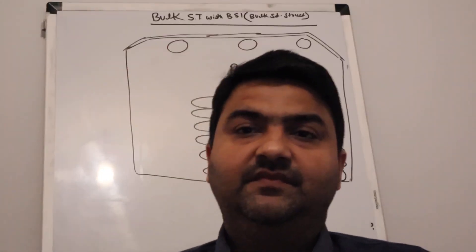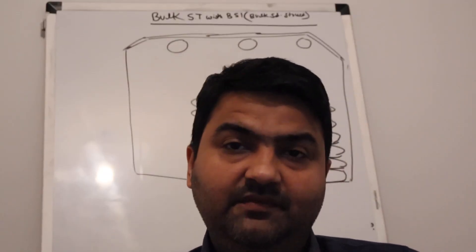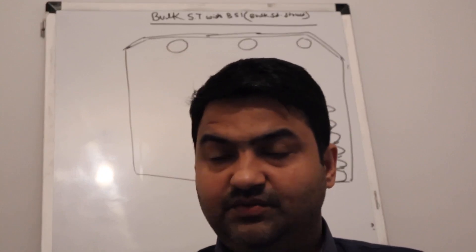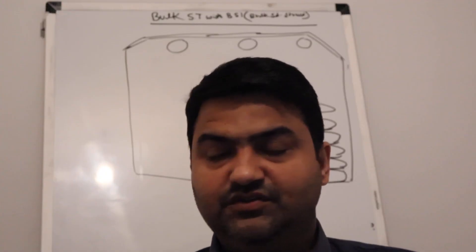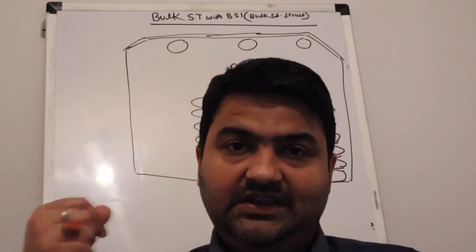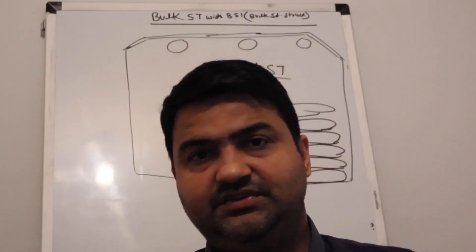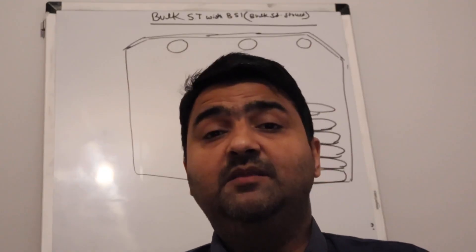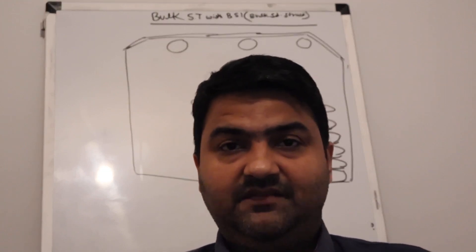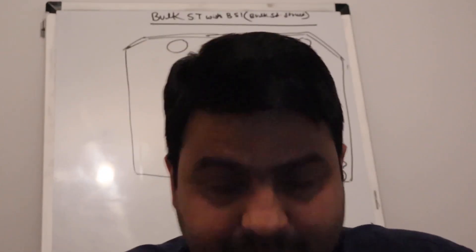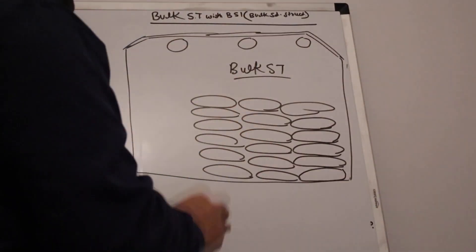How does the system know this is a bulk storage type? In the configuration, when we define a storage type, we have different options: bulk storage, hierarchy storage, pallet storage, open storage type, fast-moving, slow-moving — depending on the business. The bulky storage indicator denotes that this storage type is a bulky storage type.